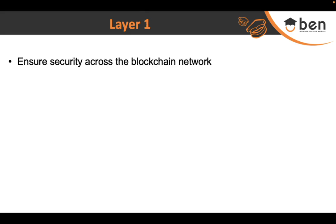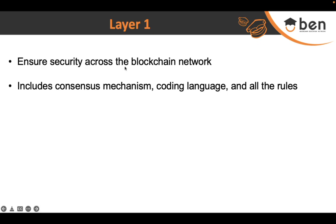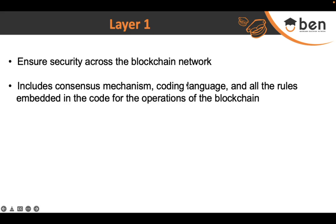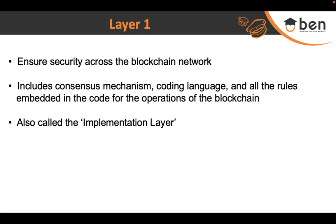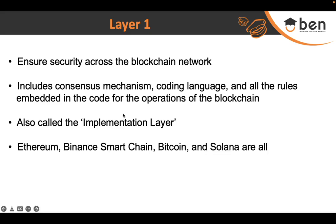Moving on to Layer 1 — security is ensured in the blockchain network at this layer. All the consensus mechanisms, which we'll discuss in the next lesson, as well as the coding languages and the rules embedded in the code, are all handled at this level. That is why it is also known as the implementation layer — all security aspects and execution happen here. Blockchains like Bitcoin, Ethereum, and Binance are all Layer 1 blockchains, as the major work of consensus and coding languages takes place at this level.